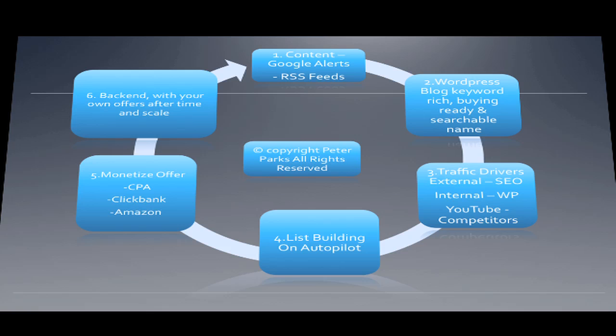The fourth key is list building on autopilot — I'll show you the blog I've built since 2007 and how everything operates. The fifth step is to monetize your blog with a CPA offer, a ClickBank offer, and an Amazon offer, and I'm doing all three with this particular blog. The sixth step is the back end — once you own your own offers, it's time to scale in your niche market and go deep and wide to take over that market.